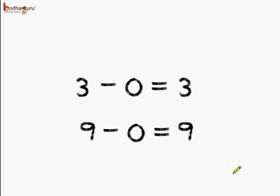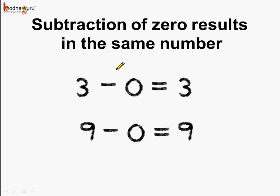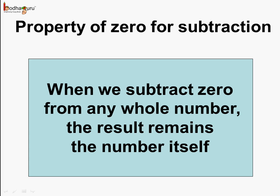What do we see? We see that if we subtract 0 from any number, the answer is the same whole number — like 3 minus 0 equals 3, and 9 minus 0 equals 9. So, we can say subtraction of 0 results in the same number. When we subtract 0 from any whole number, the result remains the number itself.